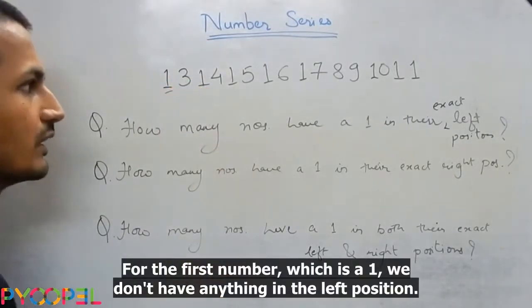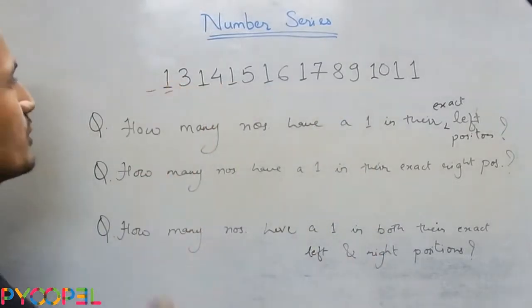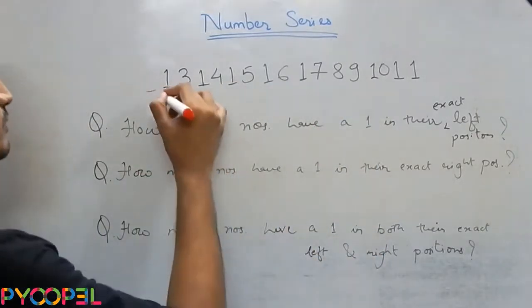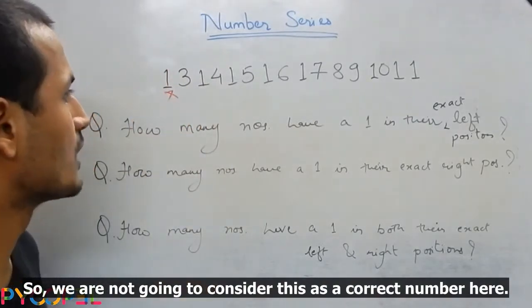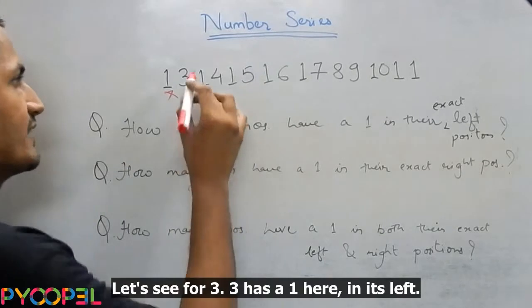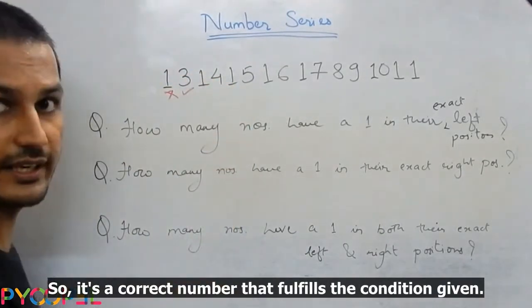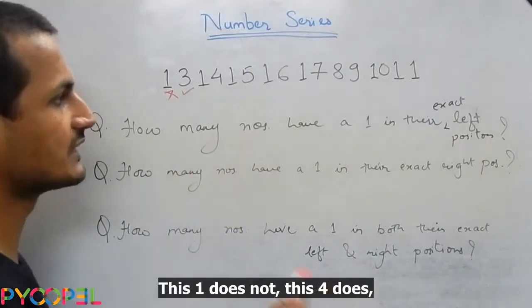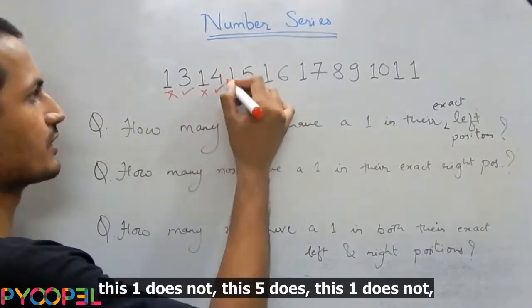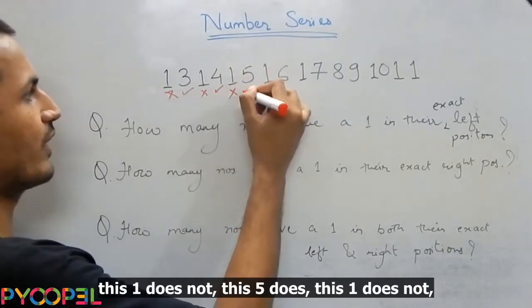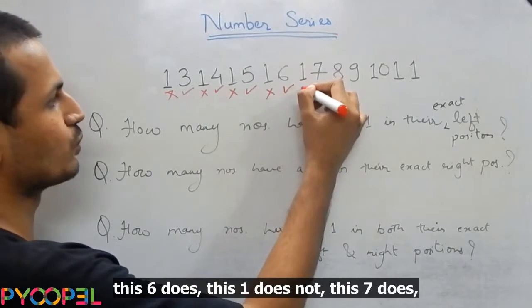For the first number, which is a 1, we don't have anything in the left position, so we're not going to consider this as a correct number. Let's see for 3. Three has a 1 here in its left, so it's a correct number that fulfills the condition given. One does not. Four does. This 1 does not. This 5 does. This 1 does not. This 6 does.